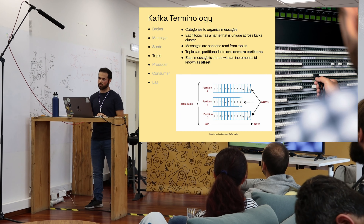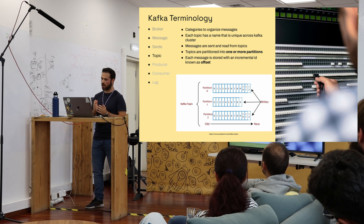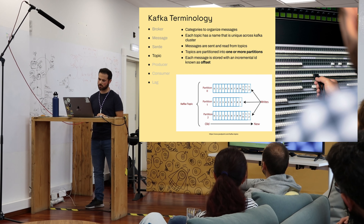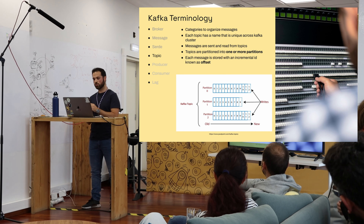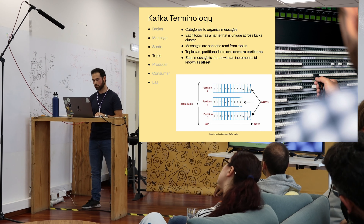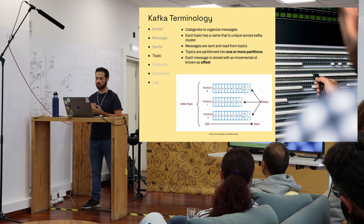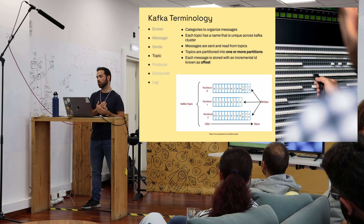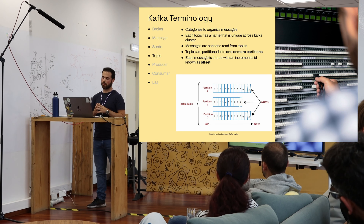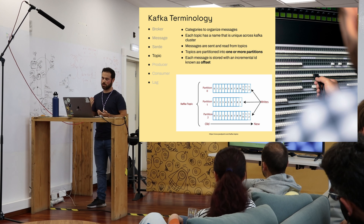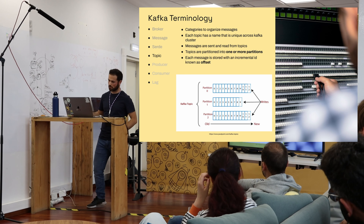Looking at this diagram, partitions 0, 1, and 2 each have messages. Each message is represented by a square with a number — that number is the offset. The offset always starts from 0 and increments with each produced message. It's like a queue: 0, 1, 2, and so on.